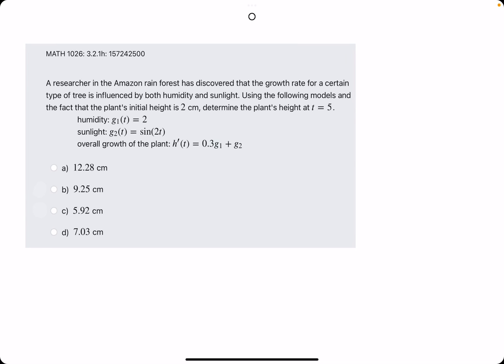Okie dokie. In this problem, to summarize, we are given a function g1 of t and g2 of t, and they both play into the overall growth of the plant.